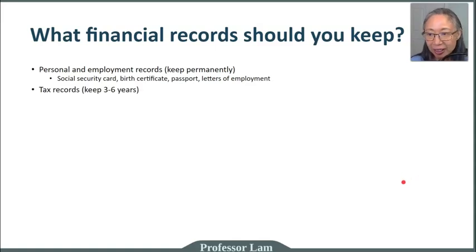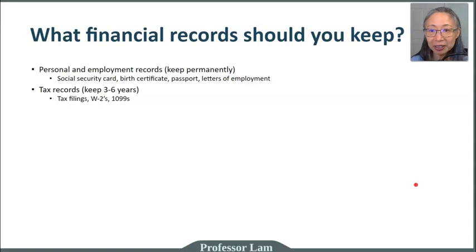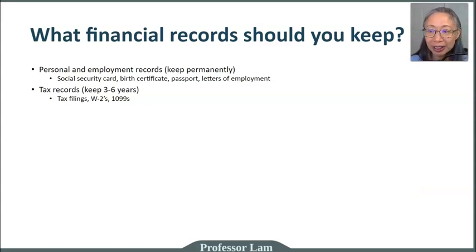The other type of records are tax records, and these you only need to keep for three to six years. These are your tax returns that you file. Today you can keep them online — just store a PDF file. Naming your file appropriately is very easy: simply include your last name, the year, and the label 'tax return,' and that will make finding the file in the future very easy.